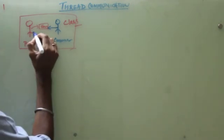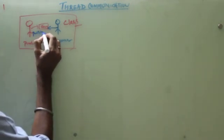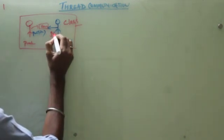What method the producer has? Put. Put an item. And what method the consumer has? Get.